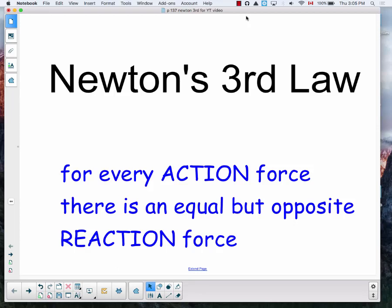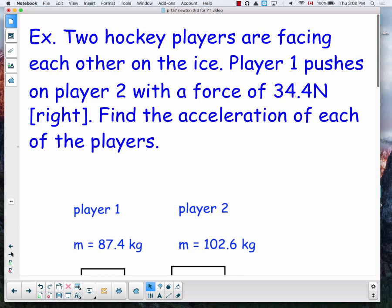Okay, so we're going to do an example of a problem dealing with Newton's third law, which states for every action force there's an equal but opposite reaction force. In this case, two hockey players are facing each other on the ice. Player one pushes on player two with a force of 34.4 newtons towards the right, and we want to find the acceleration of each of the players. We're going to make the assumption that there is no friction in this case.